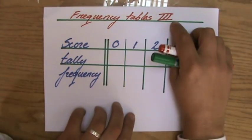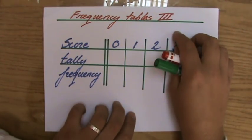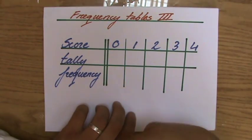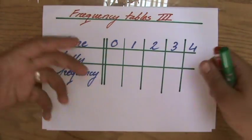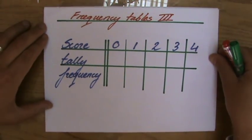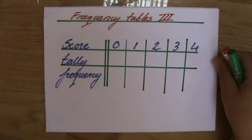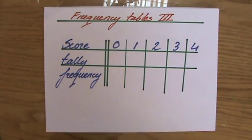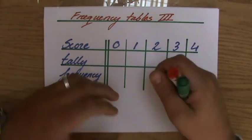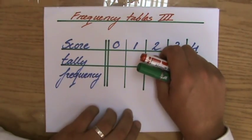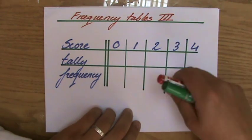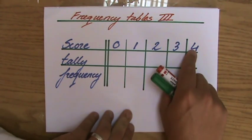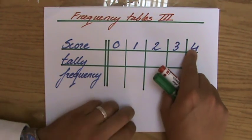We're going to talk about frequency tables. A frequency table is a way to present information. Let's say I'm investigating the scores students obtained for their maths test, and as you can see, the lowest score is zero and the highest score they can get is four.